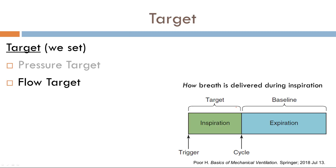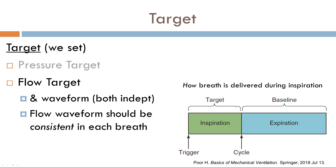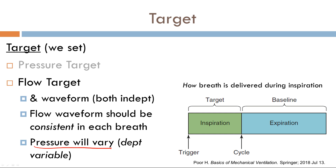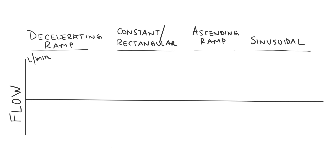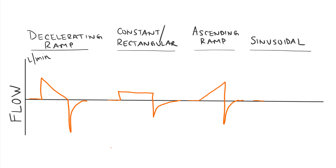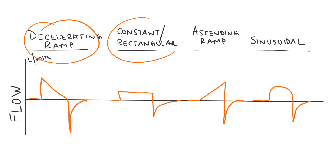Now let's talk about flow target. In flow target, the independent variable is flow — we set the flow as well as the waveform. The flow should be consistent with every single breath. Flow is the independent variable, but what varies is pressure, which becomes your dependent variable. There are a few ways we can adjust flow: we put in a numerical value and also set what the flow ramp looks like. Common ramps include decelerating ramp, constant or rectangular, ascending, and sinusoidal.